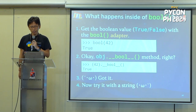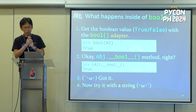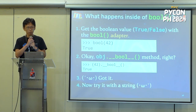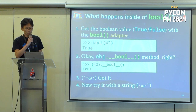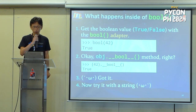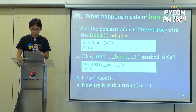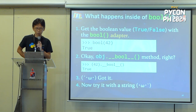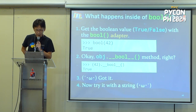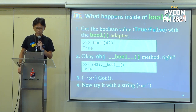What happens inside the bool adapter? The bool adapter judges the truthfulness of an object. For example, if you pass the number 42, it returns true. You might guess it's calling `object.__bool__` method inside — and that's correct. It's the same as the len adapter we discussed earlier. So next, let's try it with a string.